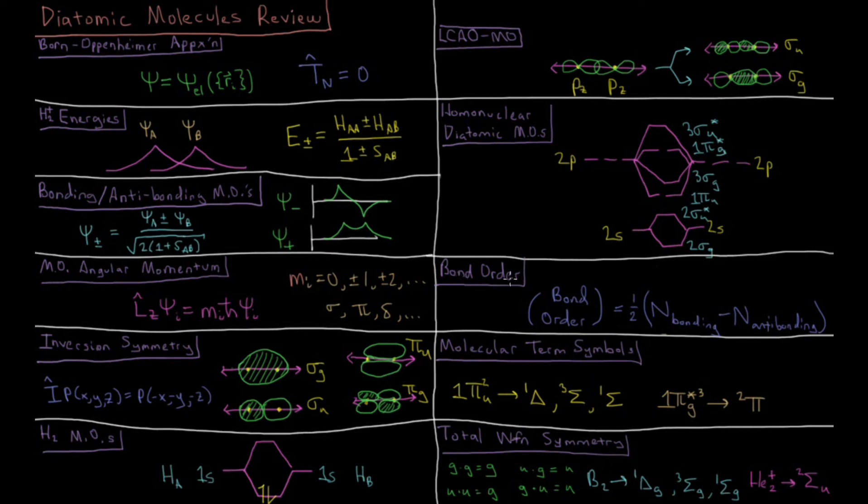To determine bond order, or how many bonds we qualitatively say there are between two atoms, we count up all of the bonding electrons, all of the antibonding electrons, and then we take that difference and divide it by one half.